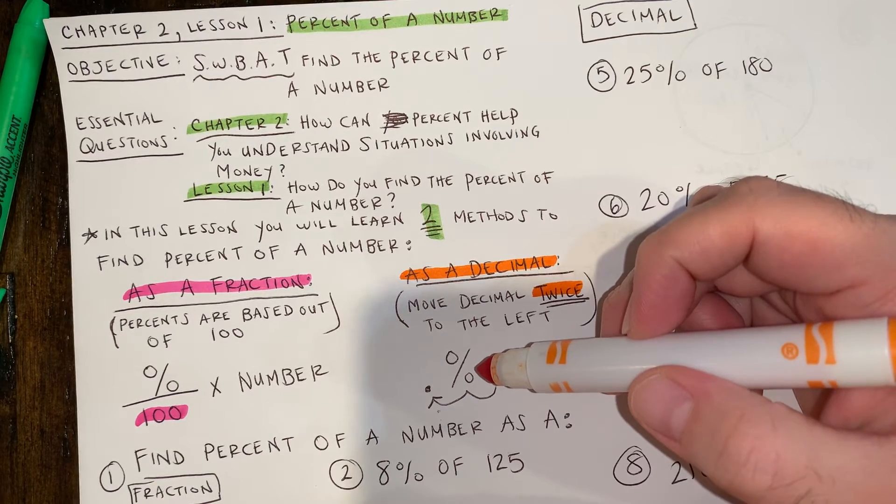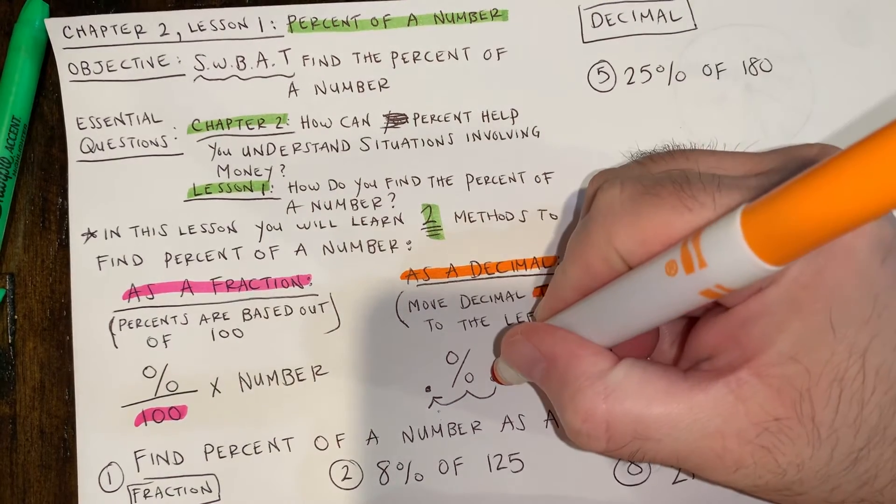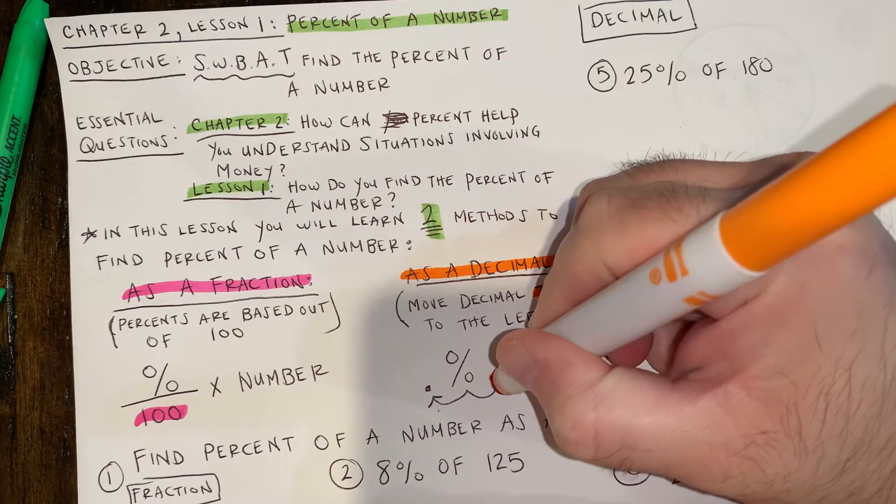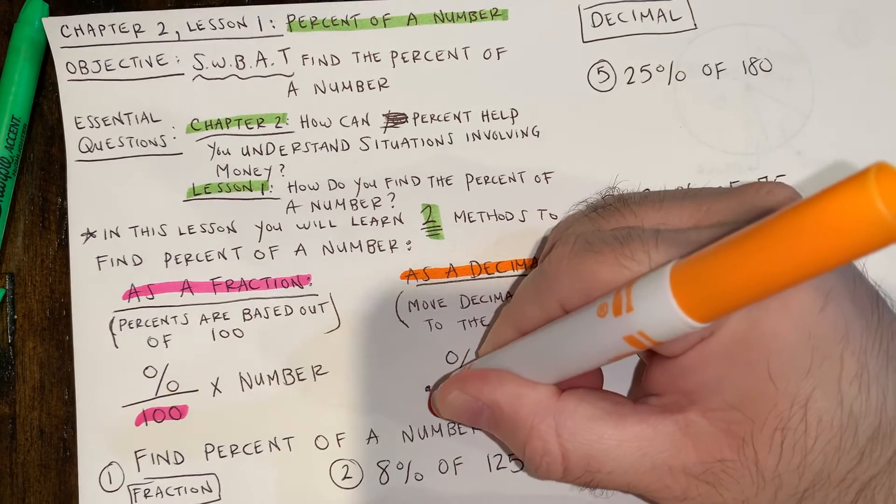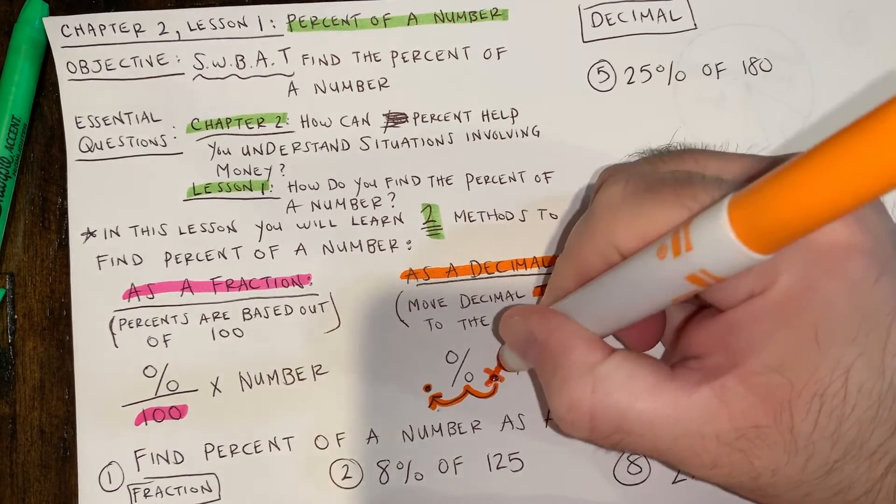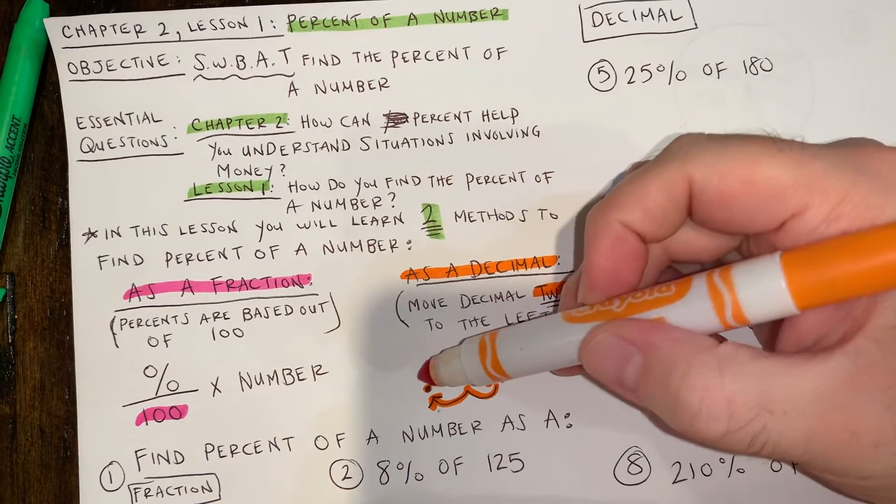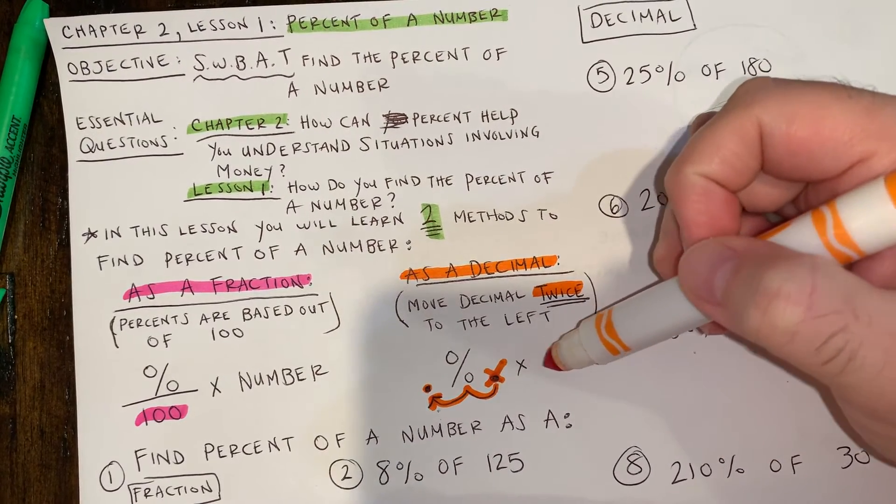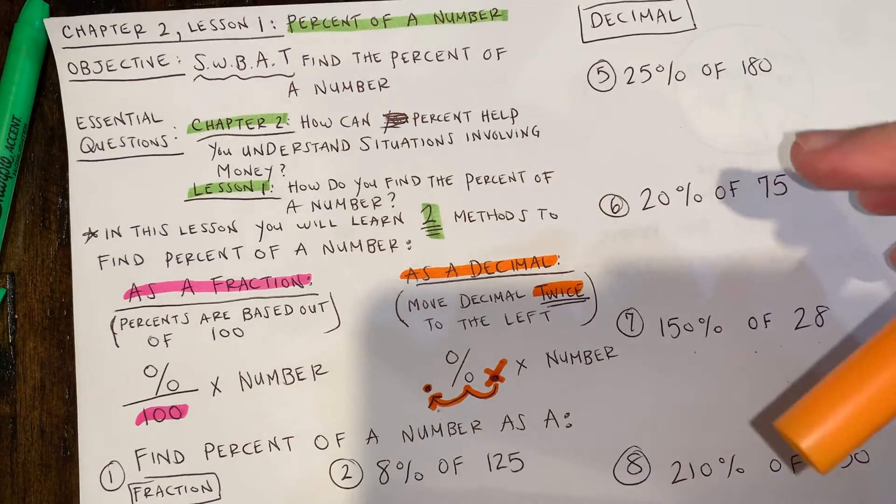So what that means is that whatever percent you're going to have, let's say you have 50 percent, you're going to add a decimal to the end. And then all you have to do is move the decimal twice to the left. This decimal no longer will be there, and then you're going to have the decimal there. And then once again, all you have to do is multiply it by whatever number they give you.